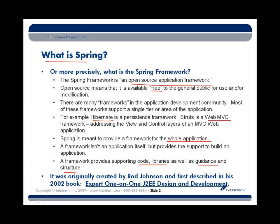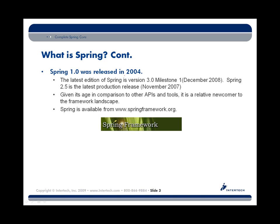Spring originated from Rod Johnson. He's an Australian who wrote a book back in 2002 that essentially said there's probably a better way to build applications than using some of the Java 2 Enterprise framework available today. Not that the J2E framework isn't good, but it is a little bit contentious to use in terms of its complexity and really gets into details without abstracting away some of that complexity. Spring 1 was released in 2004. Today we're up to version 3, which went into final release as of December 2009.